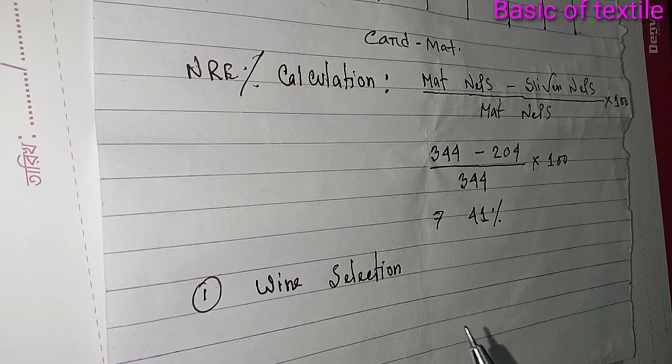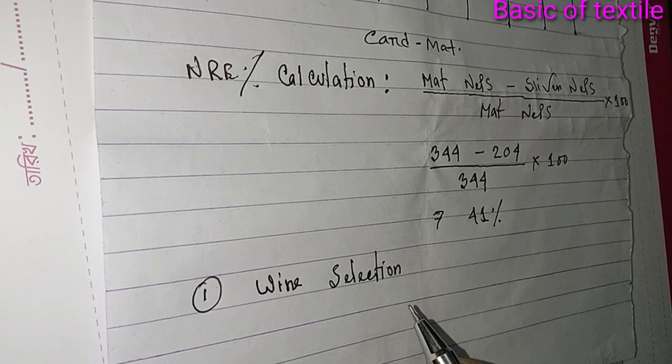NRE will be bad. NRE will be less. Ultimately the yarn quality will be bad, IPI will be high. Then ore selection, what should be done? Ore selection in spinning.